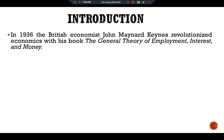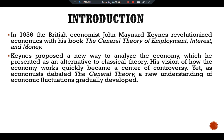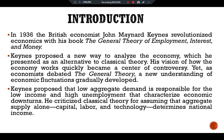In 1936, the British economist John Maynard Keynes revolutionized economics with his book, 'The General Theory of Employment, Interest and Money.' Keynes proposed a new way to analyze the economy, which he presented as an alternative to classical theory. His vision of how the economy works quickly became a center of controversy, yet as economists debated the General Theory, a new understanding of economic fluctuations gradually developed. Keynes proposed that low aggregate demand is responsible for low income and high unemployment that characterizes economic downturns.